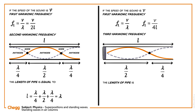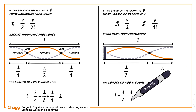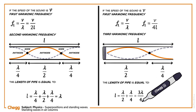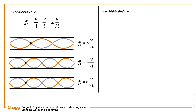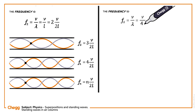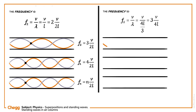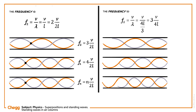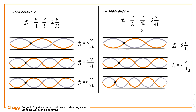The third harmonic frequency: the length of the pipe l equals λ/2 plus λ/4, which equals 3λ/4. This implies λ equals 4l divided by 3. The third harmonic frequency is f2 equals v divided by λ, which equals v divided by (4l/3), which equals 3v divided by 4l. Similarly, the fifth, seventh, and nth harmonic frequencies are: f3 equals 5v divided by 4l, f4 equals 7v divided by 4l, and fn equals nv divided by 4l.